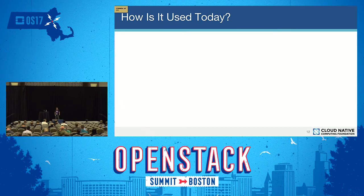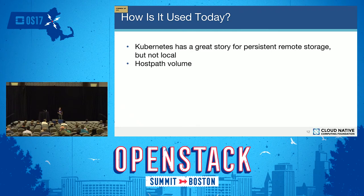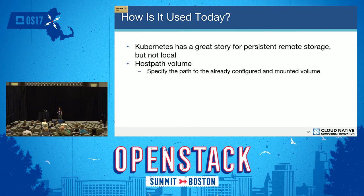Now that you understand some of these use cases, how do you actually use local storage in Kubernetes today? The solution is not very great. Kubernetes has a great story for persistent remote storage, but the story for local storage is pretty bad. Today, the only way to access persistent local storage is through what we call a host path volume, where in your application spec you specify the path to the local volume you want to use. This mechanism has a lot of problems.